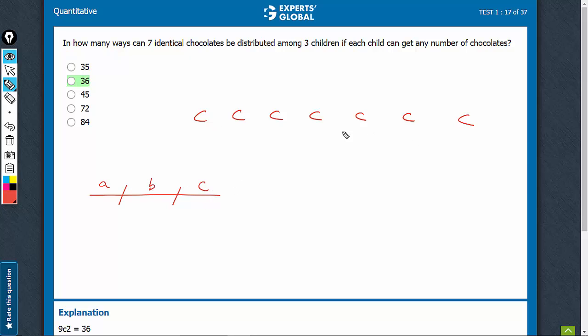So if they have to be divided among 3 children, we would need 2 cuts. And now imagine in how many ways can they be shuffled.